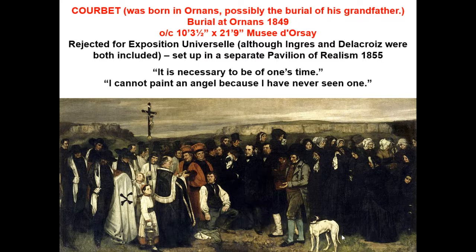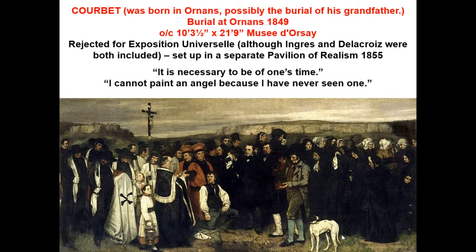So when this piece was rejected, Courbet said, 'Fine, I'll set up my own separate exhibition space.' He set up what he called a Pavilion of Realism to showcase work showing the real world the way it really was — a remarkable way of reacting against the powers that be. One of the things Courbet was known for was the saying, 'It is necessary to be of one's time.' He wanted you to be involved in the real world as it is in the here and now, instead of becoming obsessed with depicting mythological stories, religious stories, or stories from Greek and Roman history. He also said, 'I cannot paint an angel because I have never seen one.' He's not anti-religion, but he's saying he won't paint anything until he can directly observe it with his own eyes.